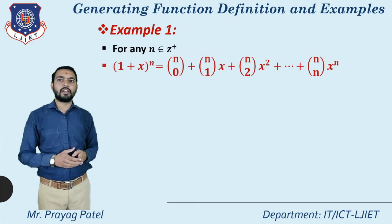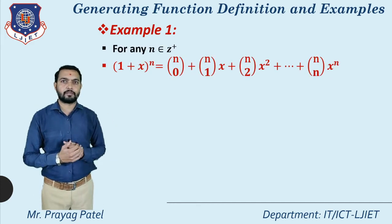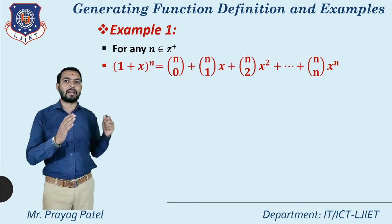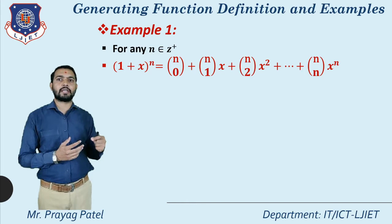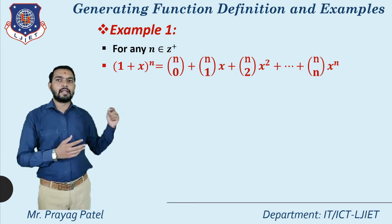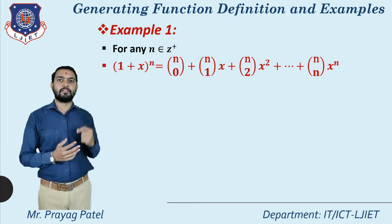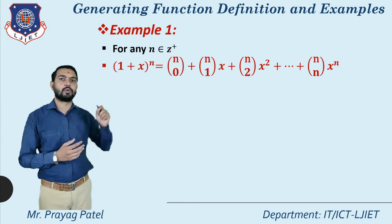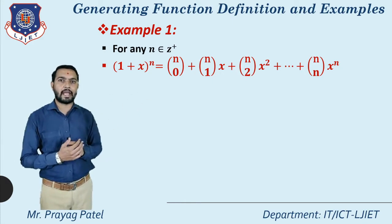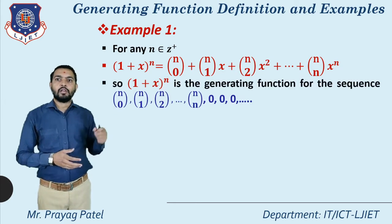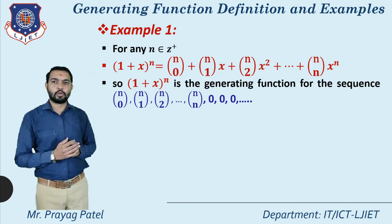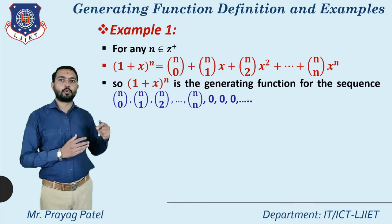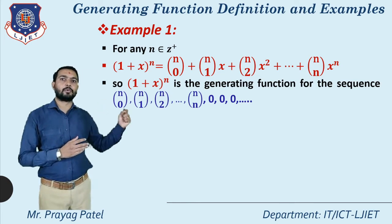Now let us understand the generating function using some examples. For example 1, for any n belonging to Z⁺, (1+x)^n equals nC0 + nC1·x + nC2·x² up to nCn·x^n. So (1+x)^n is the generating function for the sequence nC0, nC1, nC2, ..., nCn, 0, 0, 0.